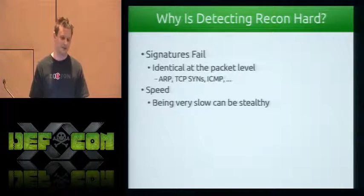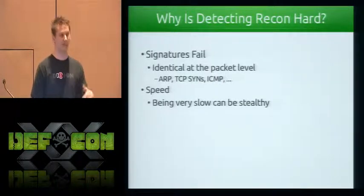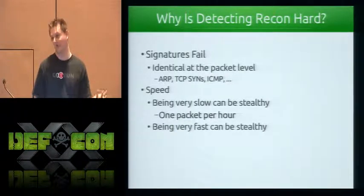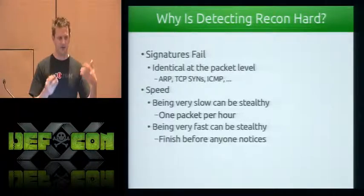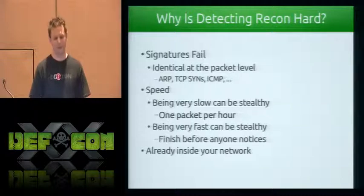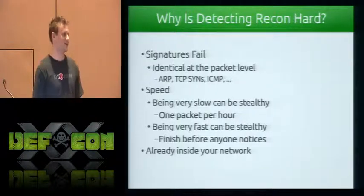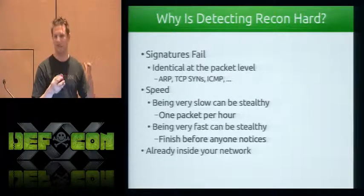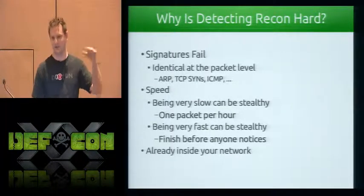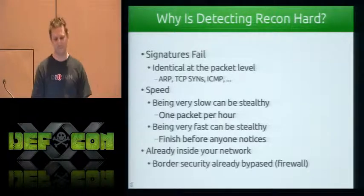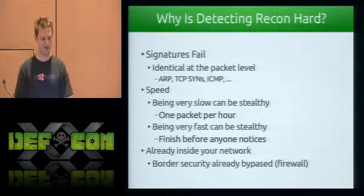Some other reasons it's hard: speed is an issue. You can be really, really slow and that can be stealthy — like sending a packet a day. Or you can be really, really fast and just finish before anybody notices. There's no speed that reconnaissance has to be at. Also, the attacker is already inside your network, so your border security is completely pointless. Even if you had awesome signatures at your border firewall, it wouldn't be any good.